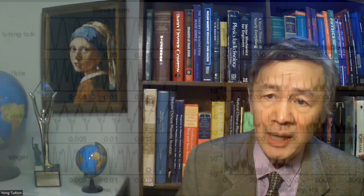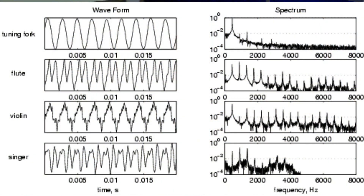In this diagram, time series and their frequency spectra of several musical instruments are shown. In this way, the color of sound can be easily identified. Hence, one can call such frequency spectra the fingerprints, similar to how DNA base pair sequences characterize genes.